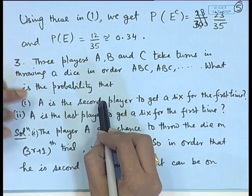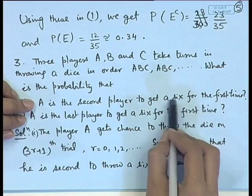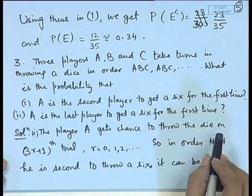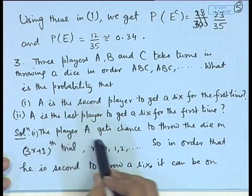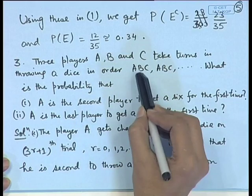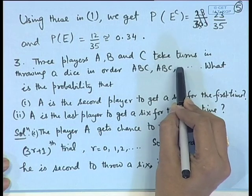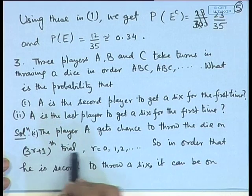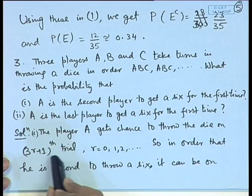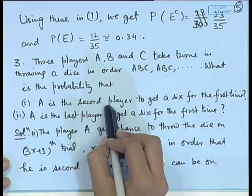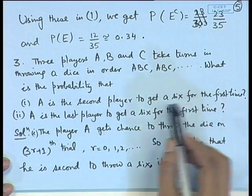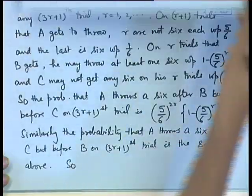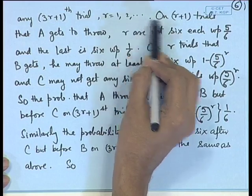For A to be the second player to get a 6, either B or C must get a 6 before A in this sequence. A gets a chance on trials 1, 4, 7, ... — that is, trial 3R+1 for R = 0, 1, 2, .... However, R = 0 is ruled out since A would then be first. So A gets his first 6 on trial 3R+1 for R = 1, 2, ....